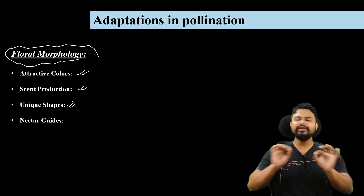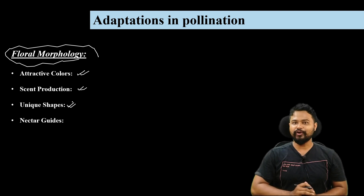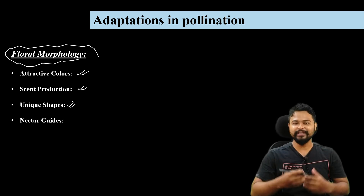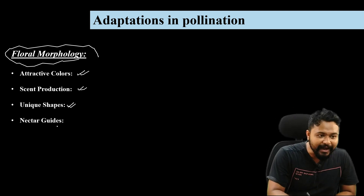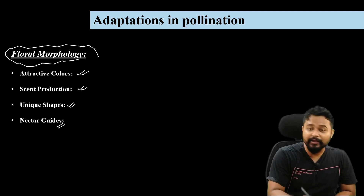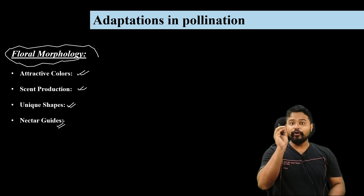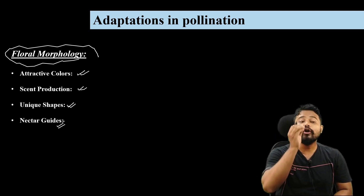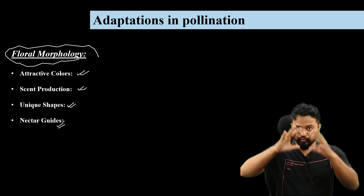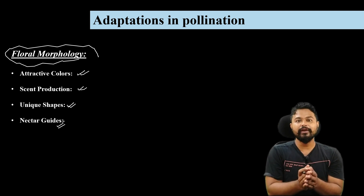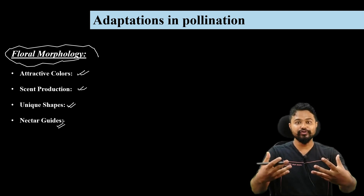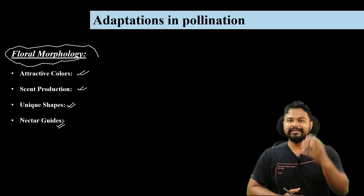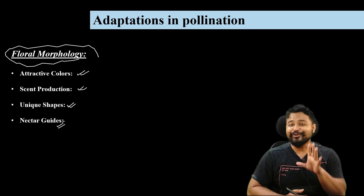Flowers may be shaped like a medium to guide insects, using nectar guides. Attractive flower scent production, unique shape — these are adaptations that flowers use to attract pollinators.